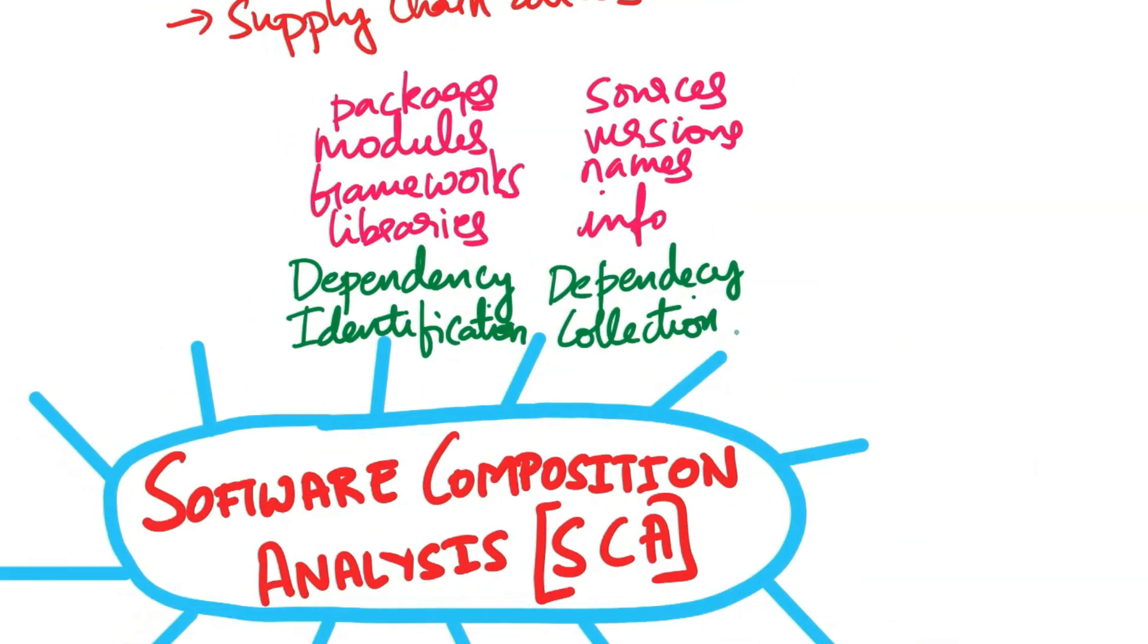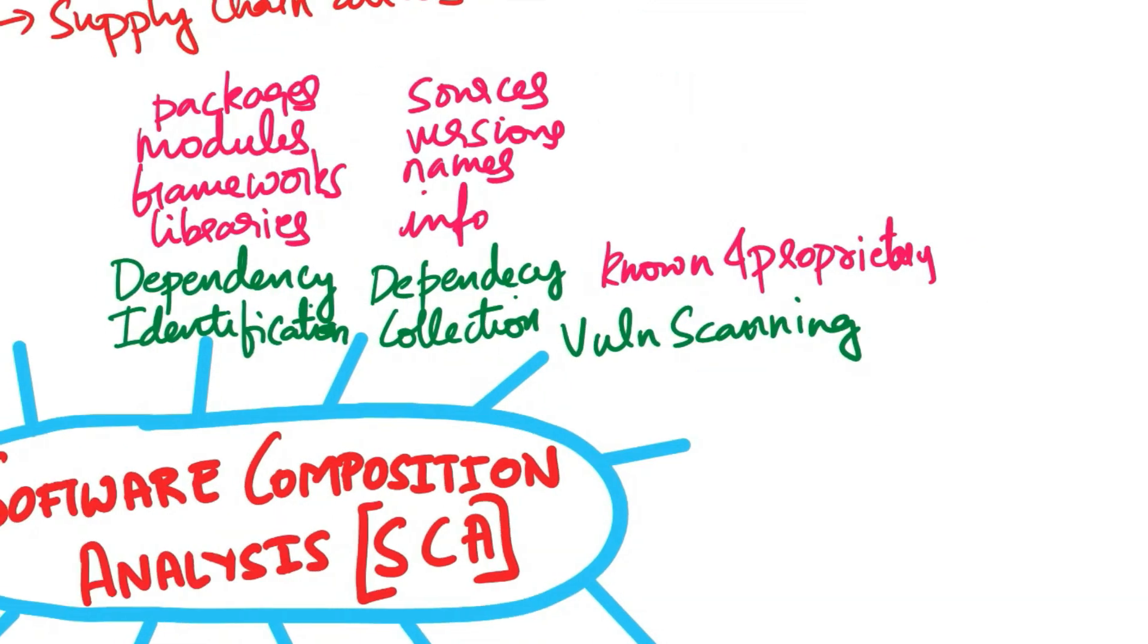Next step is vulnerability scanning. So, the SCA tools cross-reference the collected dependency information with known security vulnerabilities from various sources and proprietary vulnerability databases. You can use known vulnerabilities databases like NVD, which stands for National Vulnerability Database. The tools identify whether any of the components have known vulnerabilities. These vulnerabilities may include security flaws, bugs, or weaknesses that could be exploited.